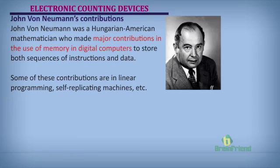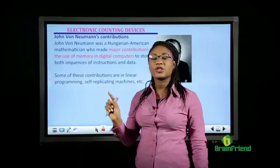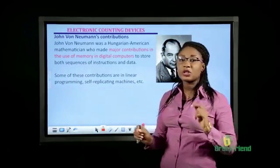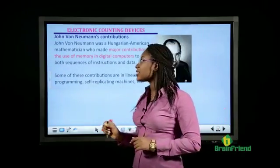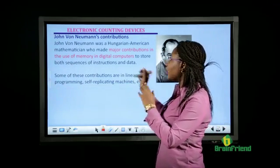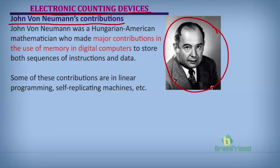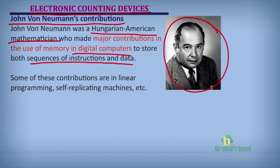Now let's look at the electronic counting devices. John von Neumann was a Hungarian-American mathematician who made major contributions in the use of memory in digital computers to store both sequences of instructions and data. Some of these contributions include linear programming.